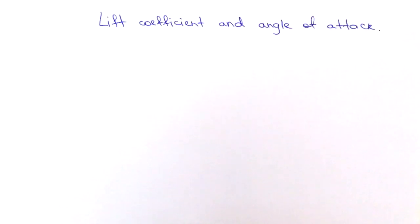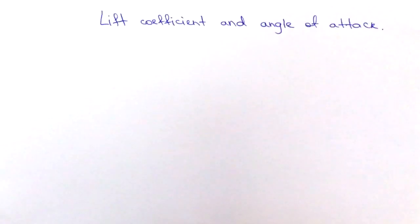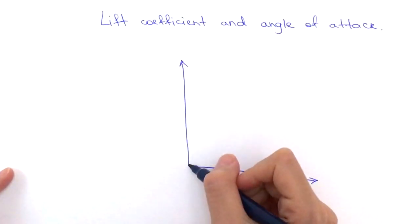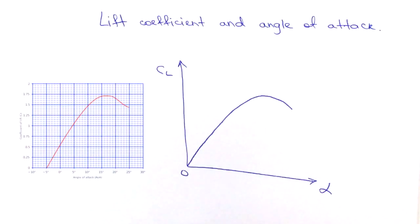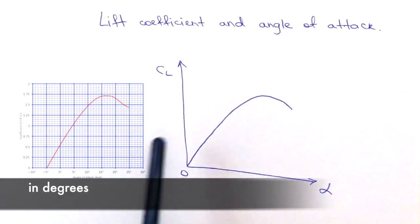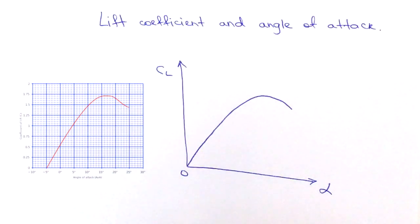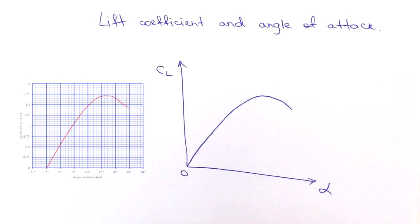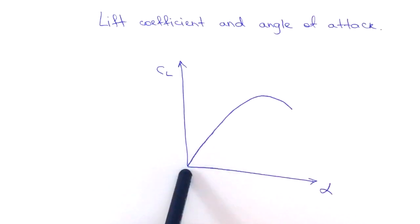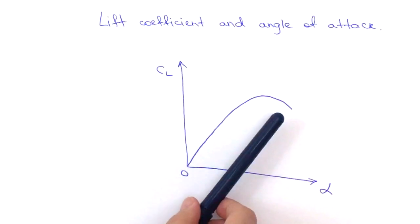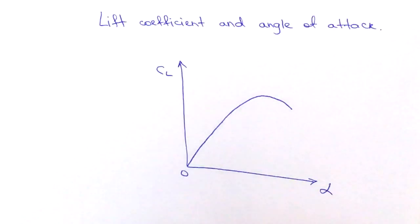Let's look at how the lift coefficient changes as we change the angle of attack for a given airfoil. I'll draw an approximate graph and also insert a picture of an actual graph. Most of these graphs show angle of attack on the x-axis and lift coefficient, C_L, on the y-axis. The lift coefficient depends on the angle of attack. We start from zero, though for some airfoils the graph is shifted slightly, but that's not critical for now.